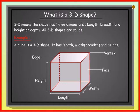Example: A cube is a 3D shape. It has length, width, breadth and height.